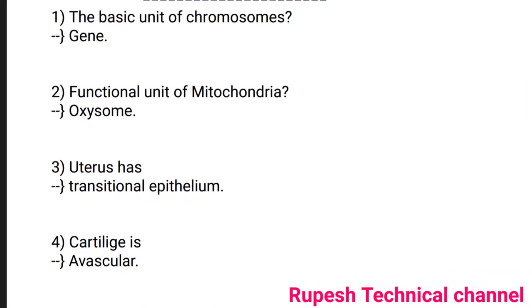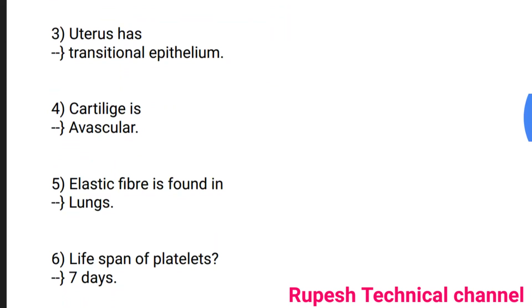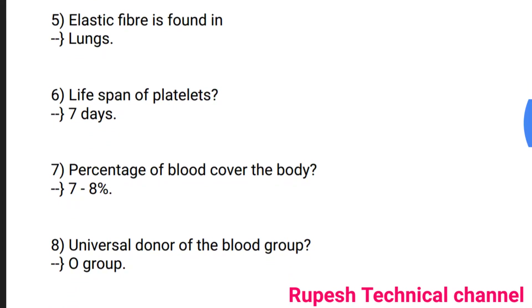Question number 1: The basic unit of chromosomes is gene. Question number 2: Functional unit of mitochondria is oxygen. Question number 3: Uterus has transitional epithelium. Question number 4: Cartilage is avascular. Question number 5: Elastic fiber is found in lung. Question number 6: Life span of platelets is 7 days.